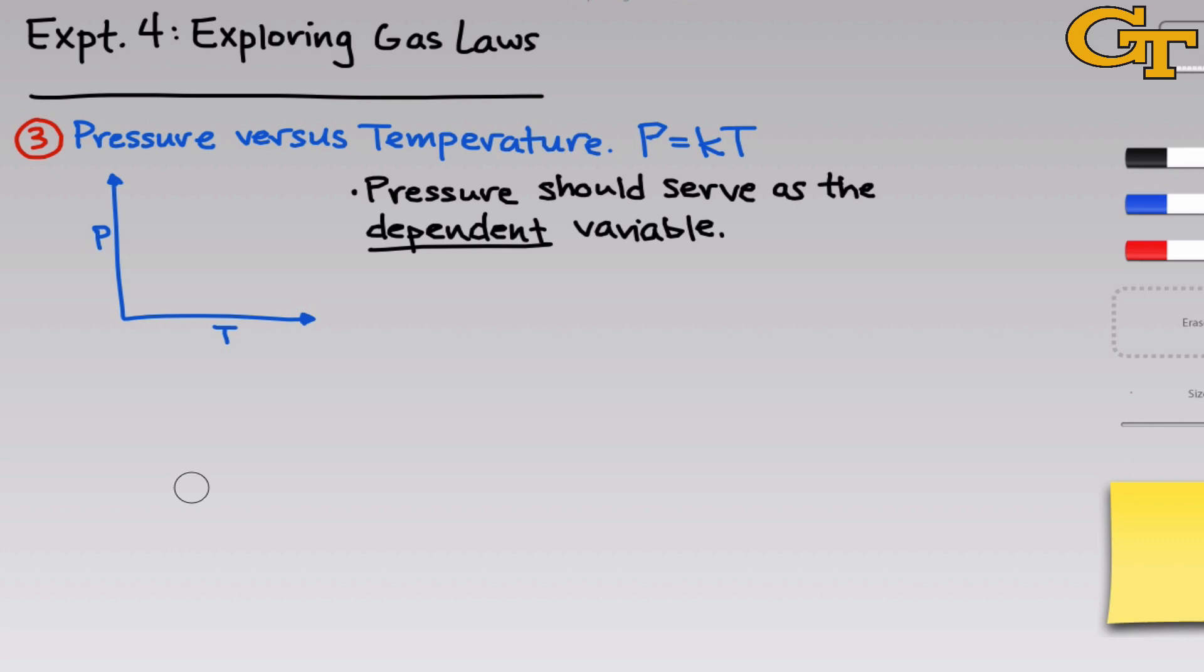Because of that, in this part of the experiment, pressure should serve as the dependent variable. We have no way to control it, so all we can really do is measure it and measure its response to the independent variable, which here, by default, is temperature.